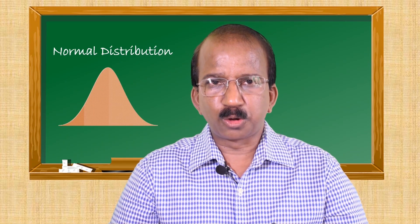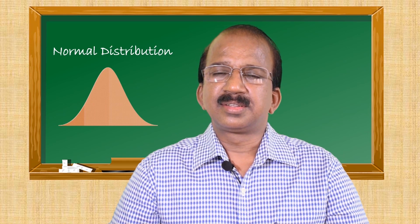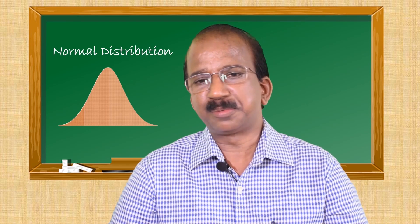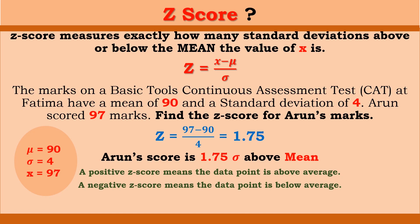Hello, I hope you have watched Normal Distribution Part 1. This is Part 2 of normal distribution. Let us have a recap of z-score. Z-score measures exactly how many standard deviations above or below the mean the value of X is, and the formula is z equals x minus mu divided by sigma.